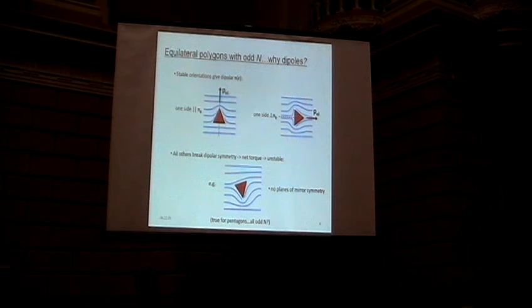All the others break these two planes of mirror symmetry, and so they give you a monopole term in the field, and so there would be a torque, they're unstable, so you don't see some weird intermediate orientation. And that's why these are dipolar.